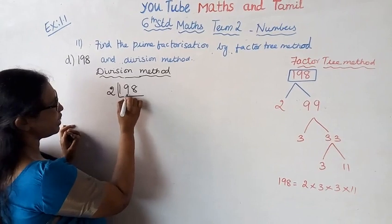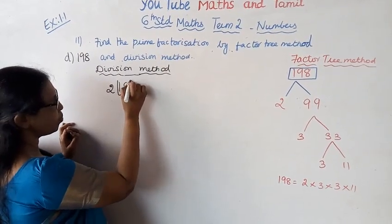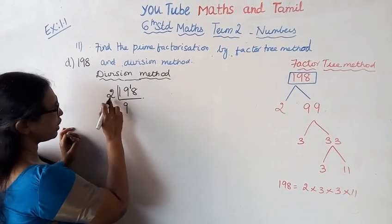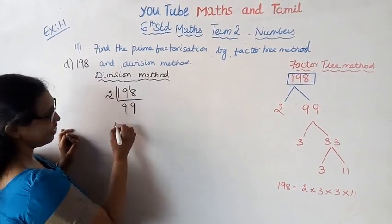9 times 18. 2, 9 times 18. Now the quotient is 1. 18, so 18 is an even number, so I'll put 2 again. 2, 9 times 18.